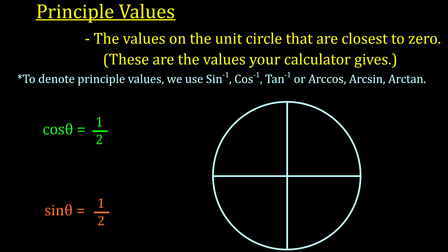To know that you're working with principal values, look for a capital letter — capital Sine, capital Cosine, or capital Tangent. You may also see Arc Cos, Arc Sine, or Arc Tan with a capital A; those also indicate principal values. Arc cos is the exact same thing as cosine inverse — it's just a different notation, and some textbooks use one, some use the other.